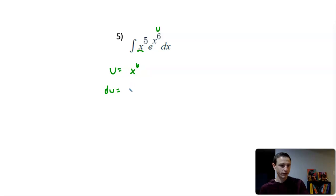So I'm going to take the derivative of u. Derivative of x to the sixth is 6x to the fifth dx. So yeah it does work out. I have x to the fifth, x to the fifth dx, dx.